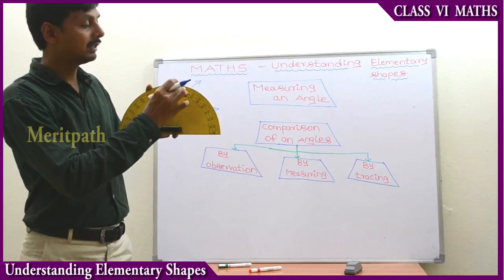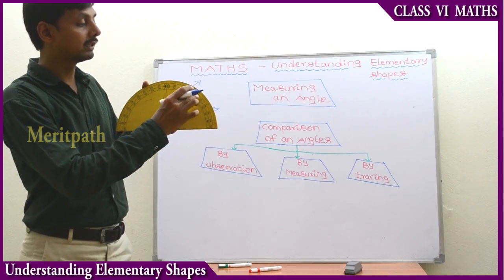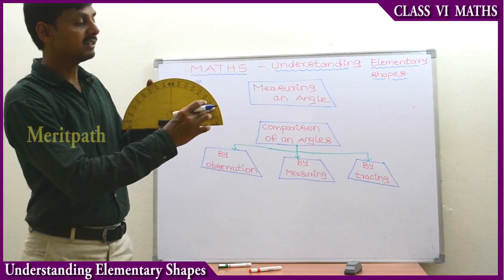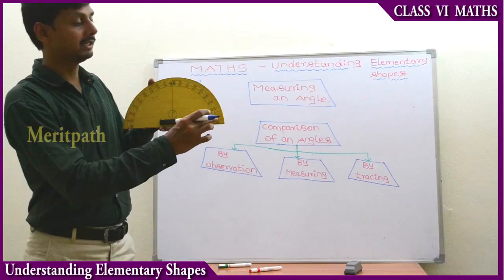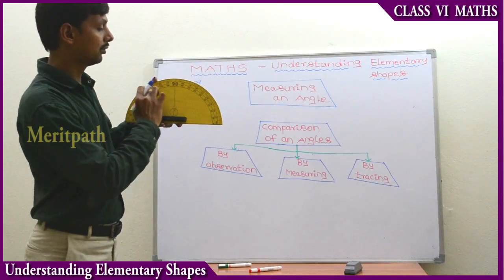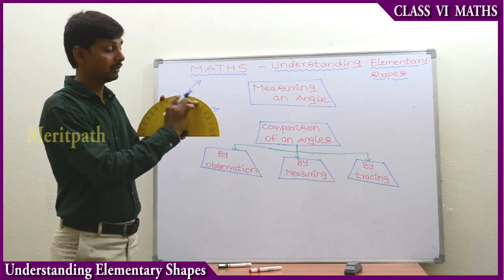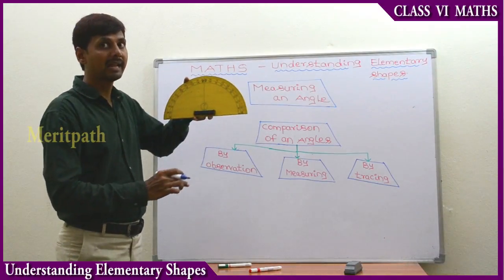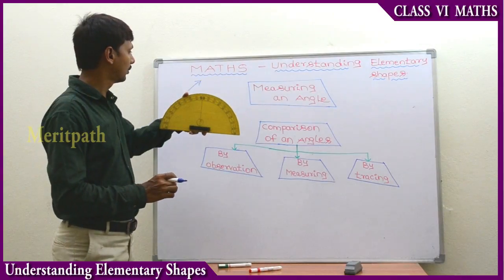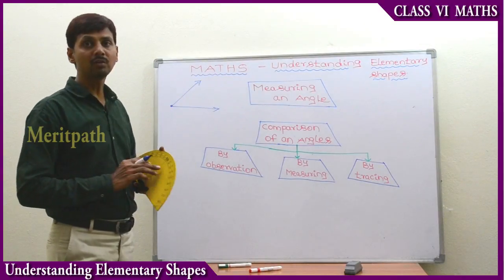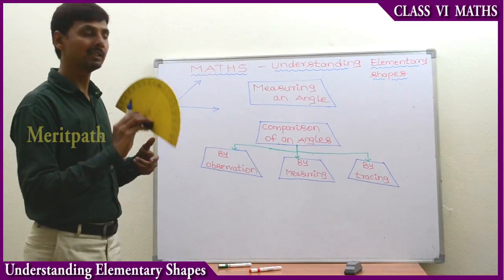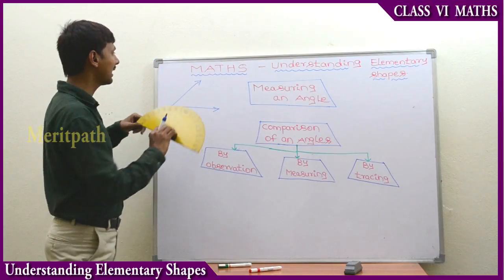And then 110, 120, 130, 140, 150, 160, 170, 180. So this half of the circle has 180 degrees. We use this protractor to measure an angle.